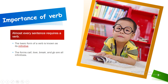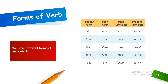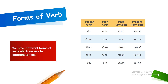Almost every sentence requires a verb — that is a point to be remembered. Then we have the forms of verb. We have different forms of verb which we use in different tenses. We have the first form, also called the present form. Then the past form, or second form. Then the past participle, or third form. Then the present participle, or fourth form — the -ing form of verb.